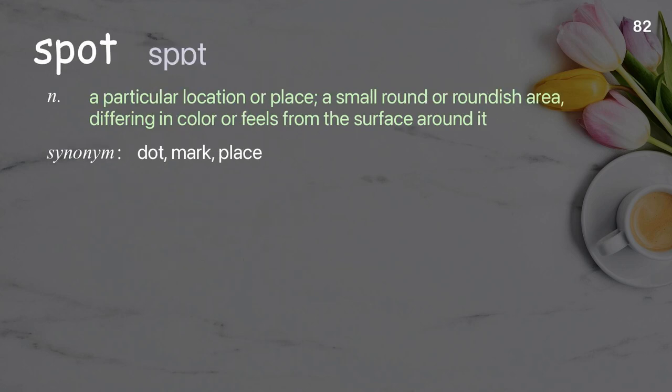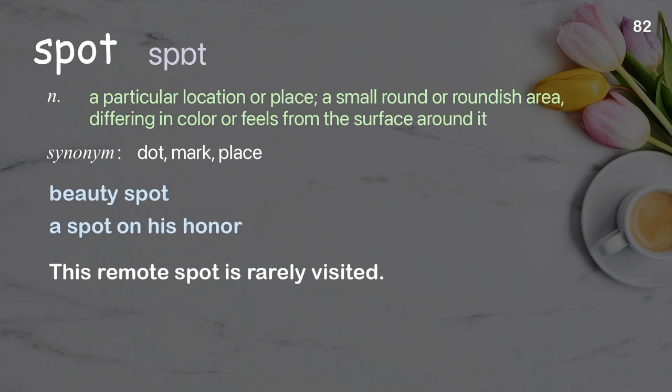Spot. A particular location or place; a small round or roundish area differing in color or feel from the surface around it. Examples: beauty spot, a spot on his honor. This remote spot is rarely visited.